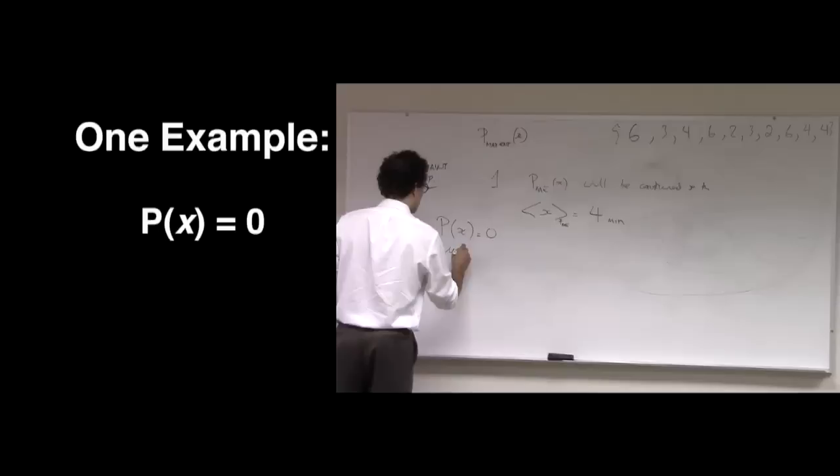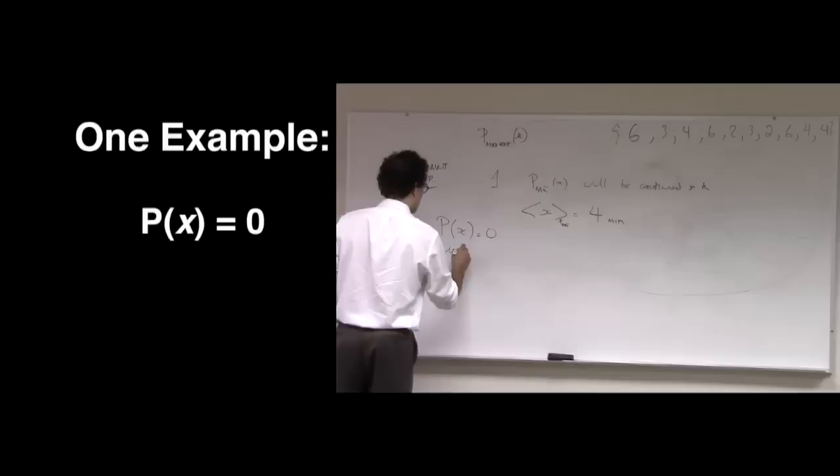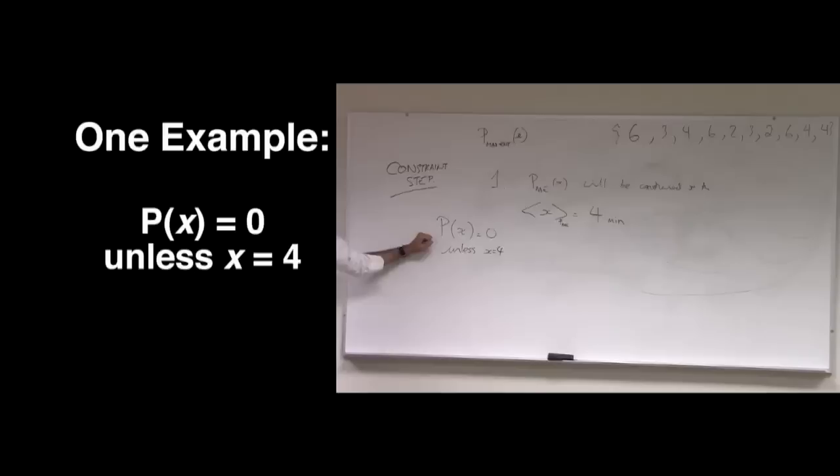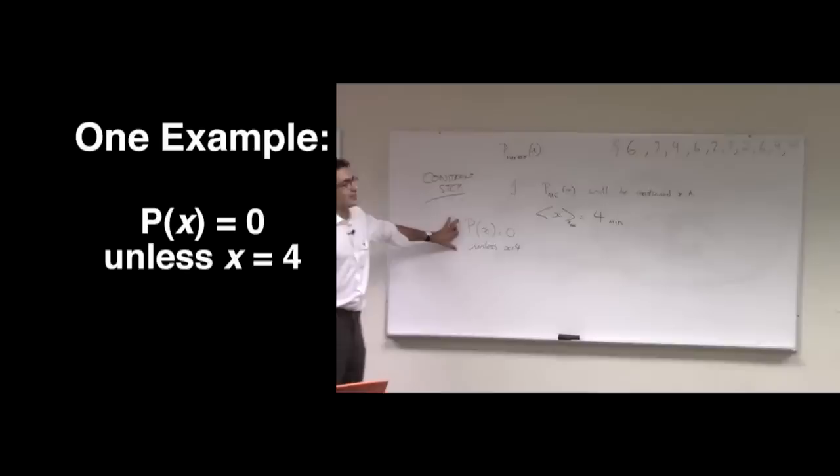Here's one. The probability of waiting X minutes is 0 except when X equals 4. Just to be technical, this is a definition that would only work in the discrete case. We'd have to use delta functions. I will spare you the delta functions.